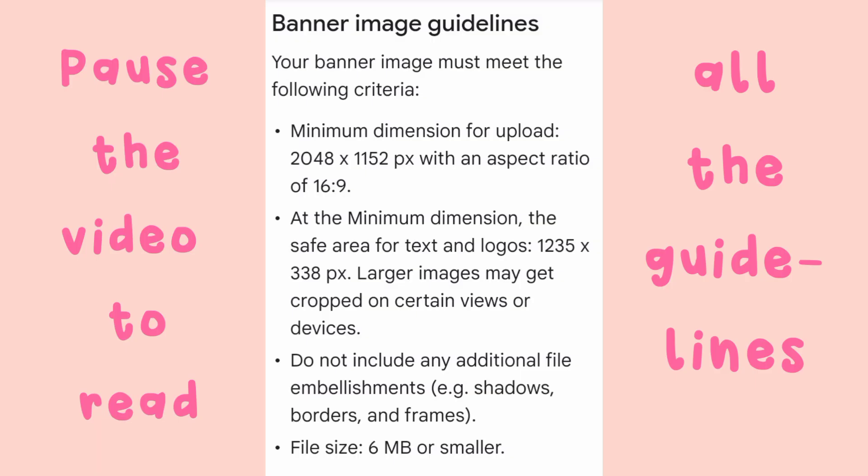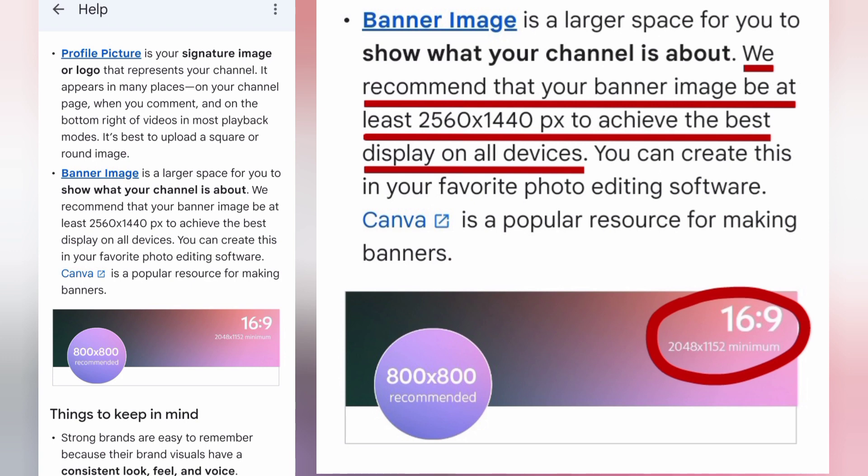Your channel art or banner image should have a 16 by 9 ratio and should be a minimum of 2048 by 1152 pixels. According to YouTube's recommendation, your channel art or banner image should be at least 2560 by 1440 pixels to achieve the best display on all devices.